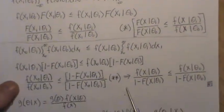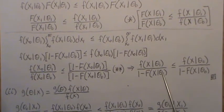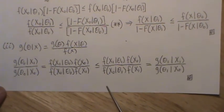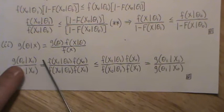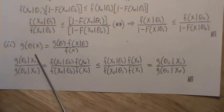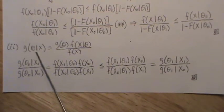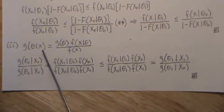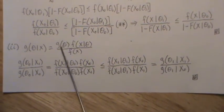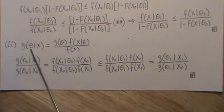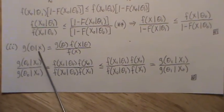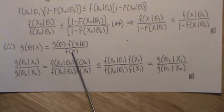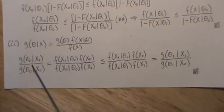Now to show that the Bayesian update has the monotone likelihood ratio property and is increasing in x. As a reminder, using conditional probability we can write g(theta | x) in terms of the joint distribution of theta and x rewritten in conditional form. This is standard for Bayesians. Let's look at the ratio g(theta_1 | x_1) / g(theta_0 | x_1) over g(theta_1 | x_0) / g(theta_0 | x_0).